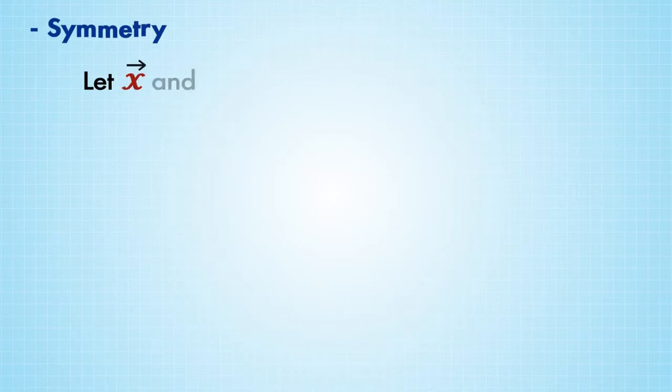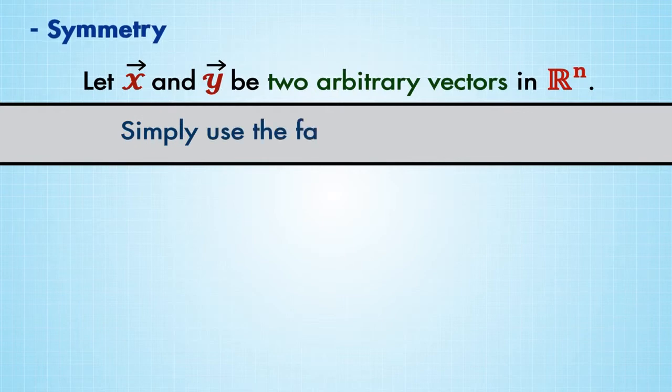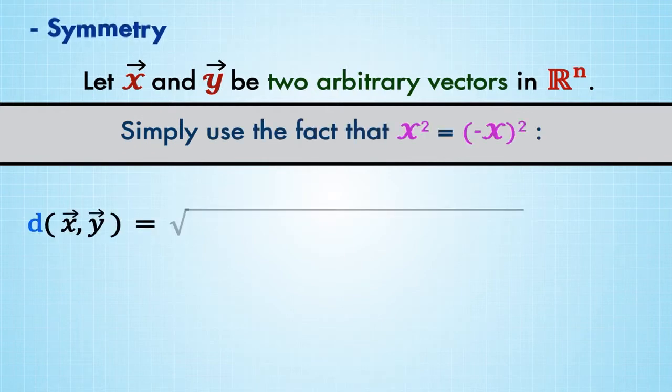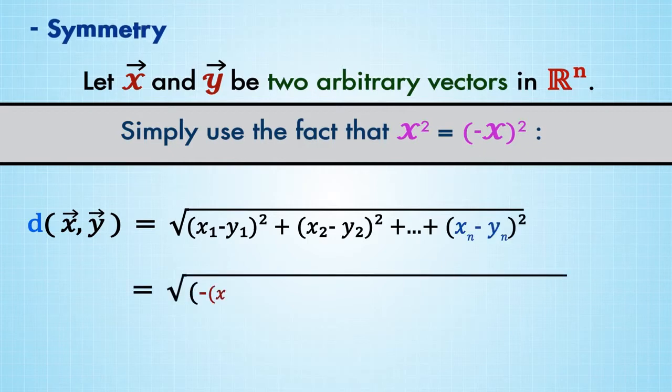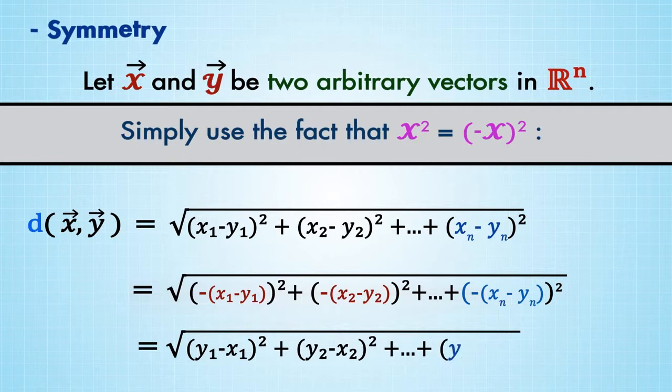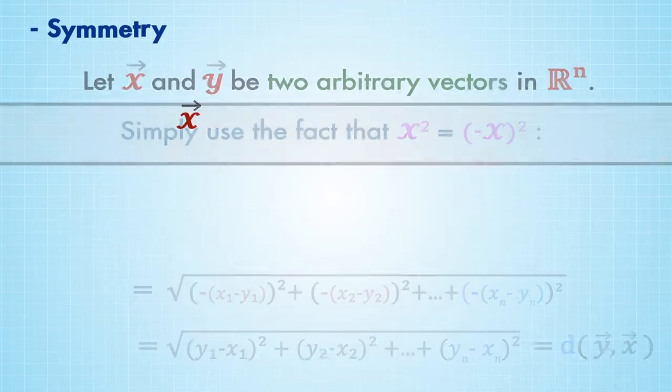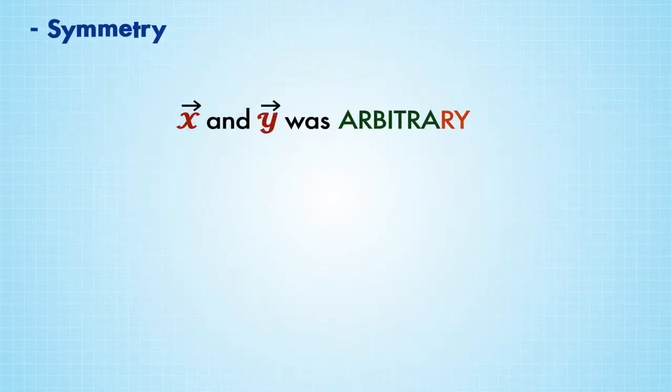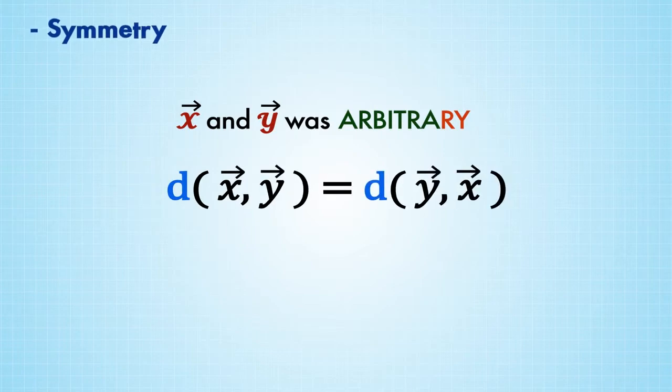Symmetry. Let x and y be two arbitrary vectors in R^n. Simply use the fact that x squared equals minus x squared. Replacing each squared term in d(x,y), we get the square root of (y1 minus x1) squared plus (y2 minus x2) squared up to (yn minus xn) squared, which is the same as d(y,x). Since the choice of x and y was arbitrary, d(x,y) equals d(y,x) for all x and y in R^n.